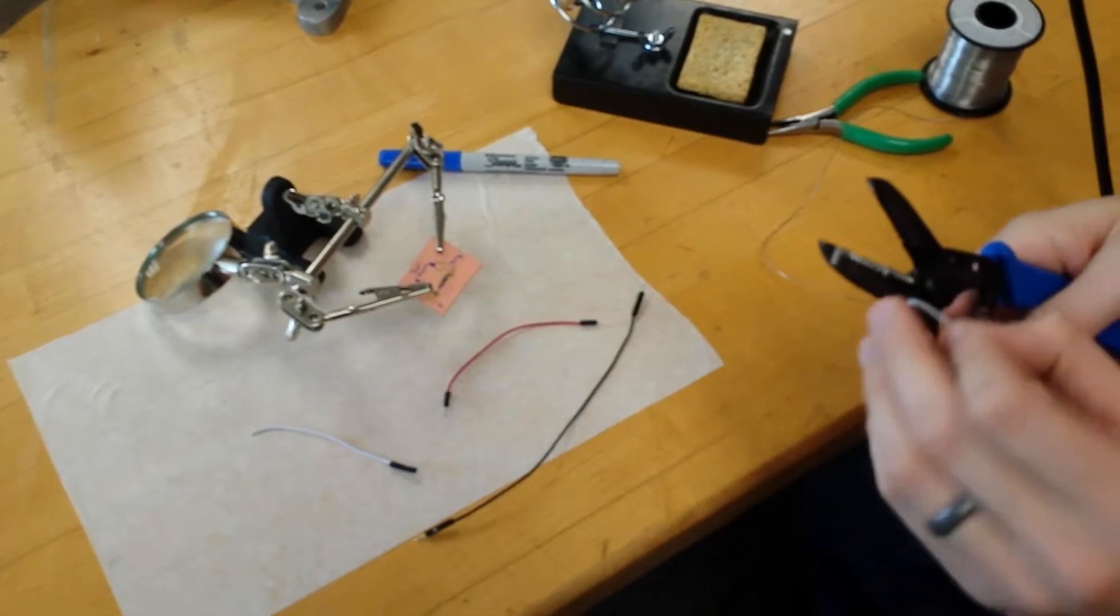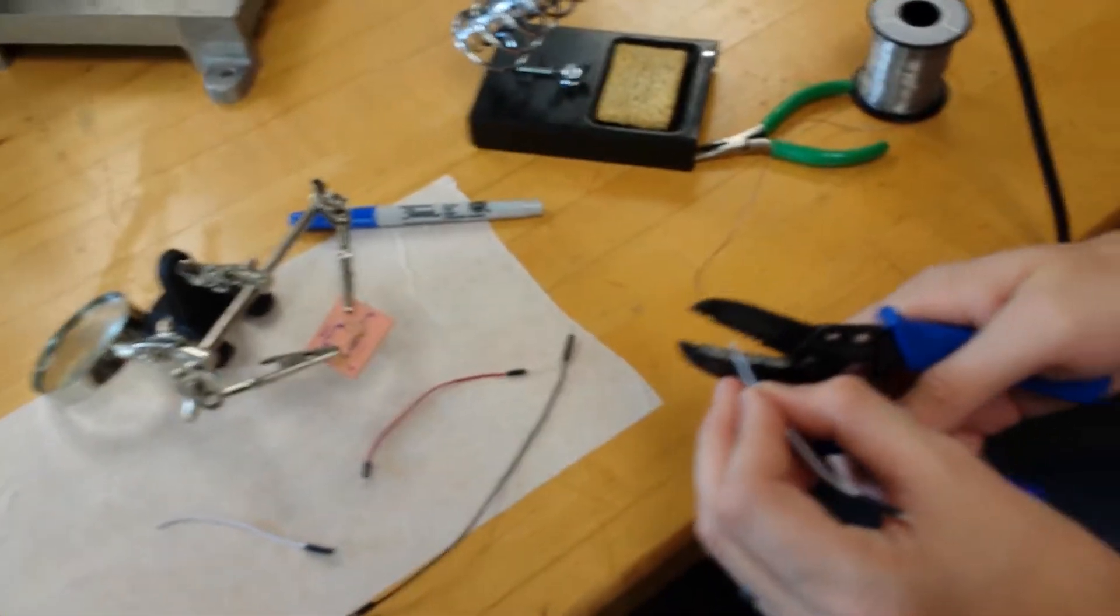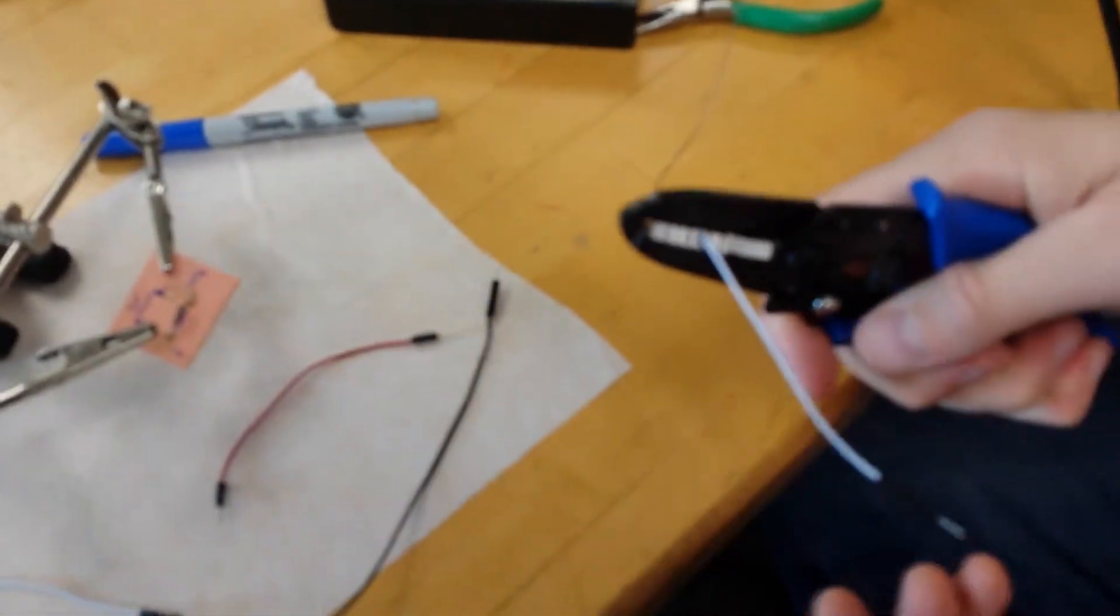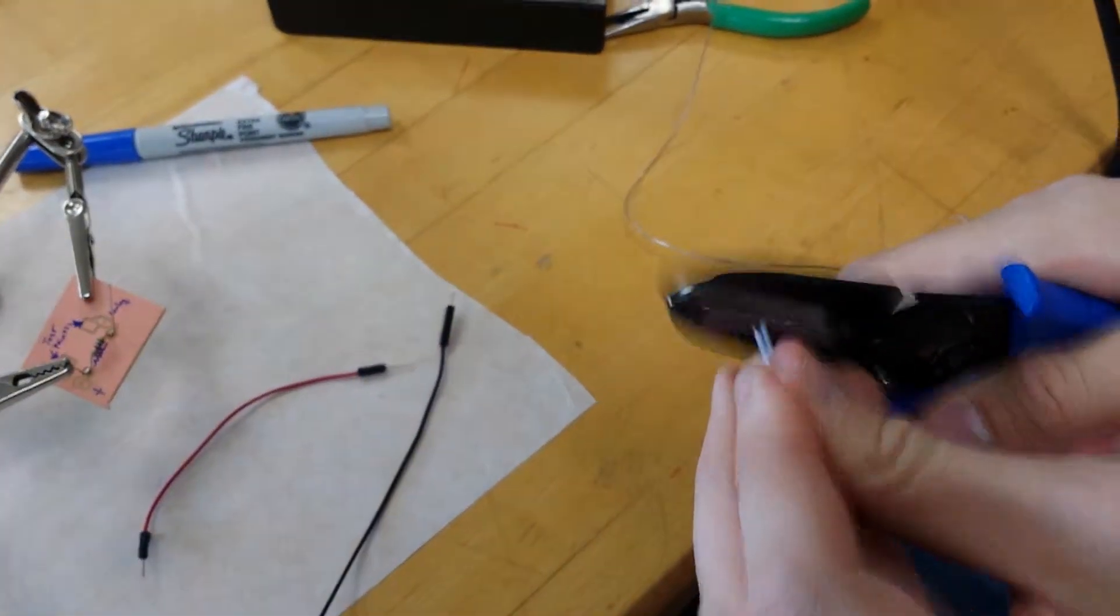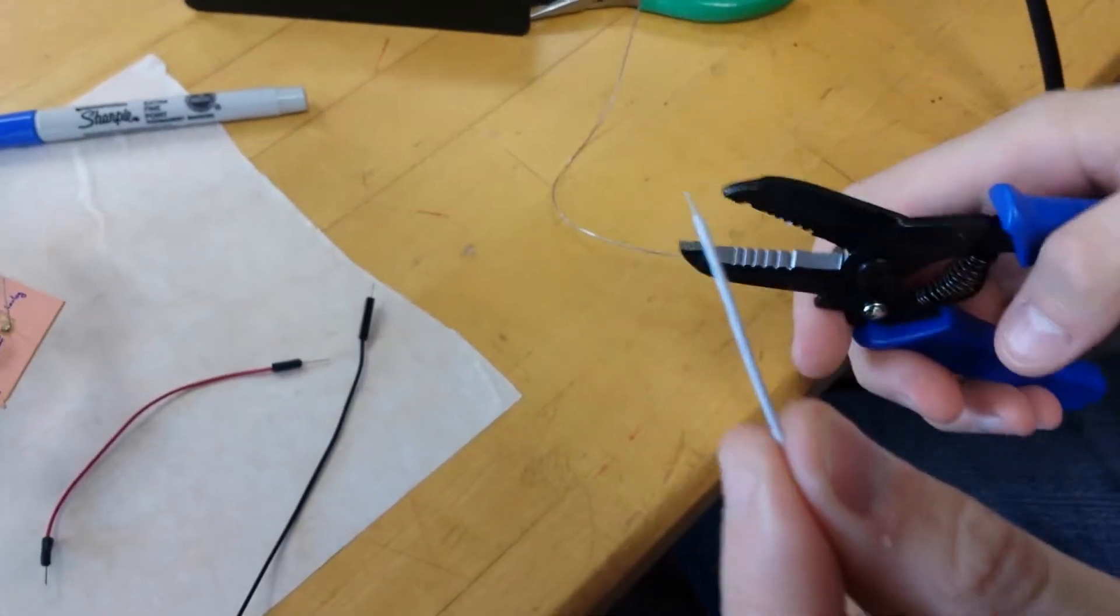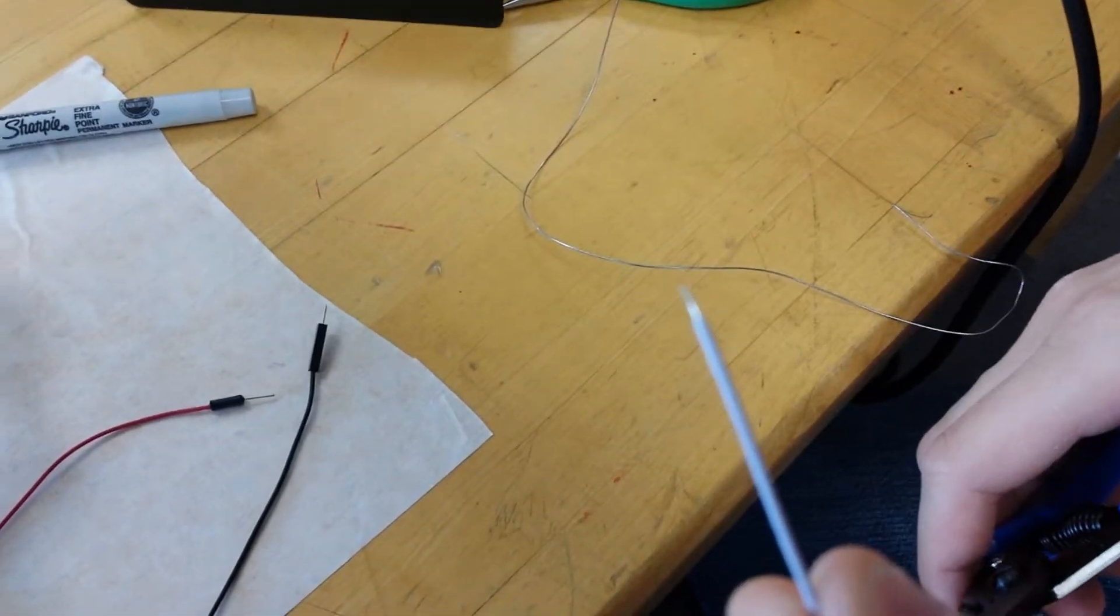And then using the wire gauge here, you're going to stick this into some place where it fits perfectly. And you pull and that strips the plastic off of that wire.